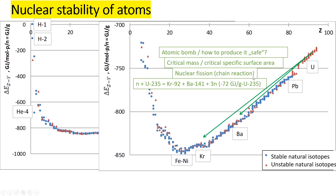When mankind first discovered nuclear fission with chain reaction, we had a choice: develop a very efficient nuclear plant for peaceful energy production, or build an atomic bomb to kill each other with higher efficiency. Obviously you all know from history that the atomic bomb was built first.